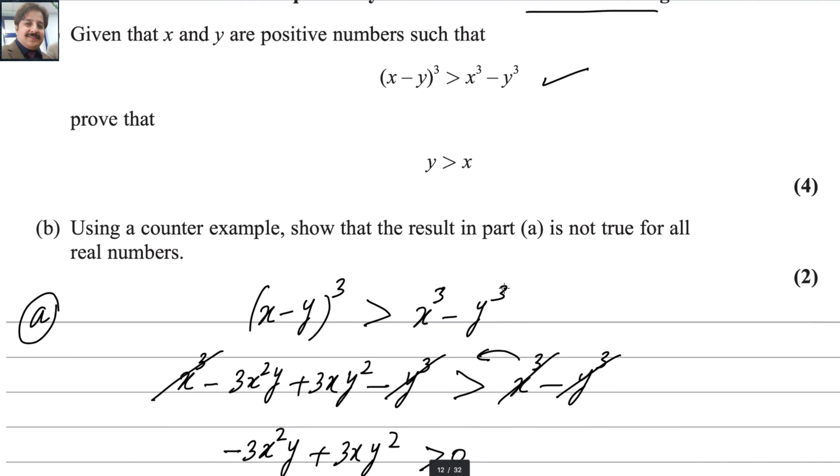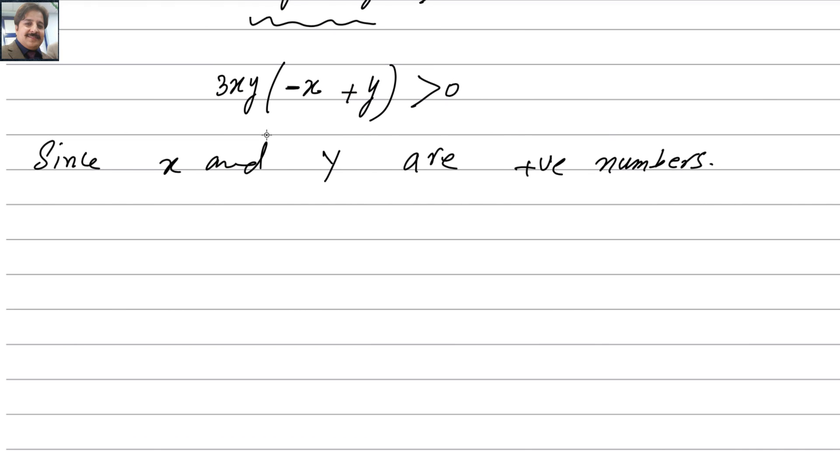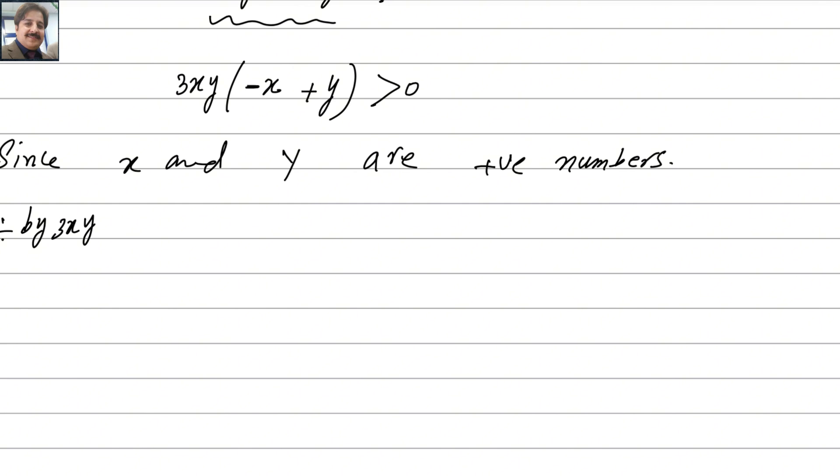Since x and y are positive integers, positive numbers, you can divide by 3xy. If you don't mention this, the examiner might deduct marks because you must give valid reasons why you're canceling 3xy from the left side. When you divide by a positive number, the inequality does not change. For example, 6 is smaller than 12, but when you divide by a negative value like -2, you get -3 and -6, and the inequality changes. Therefore, you must mention that since x and y are positive numbers, you can divide by the positive number 3xy without changing the inequality.